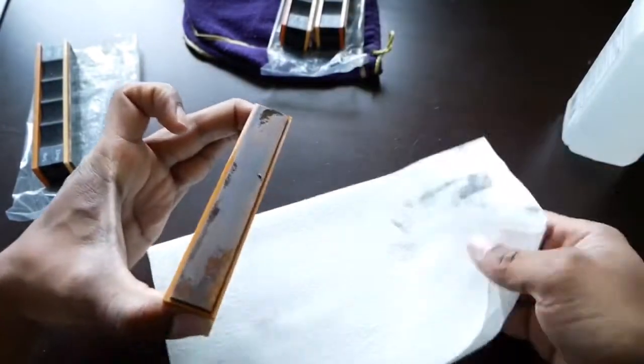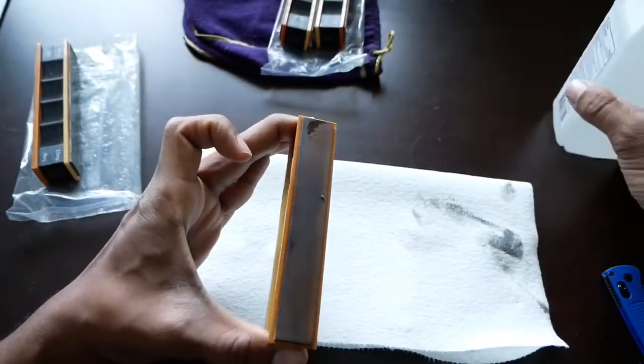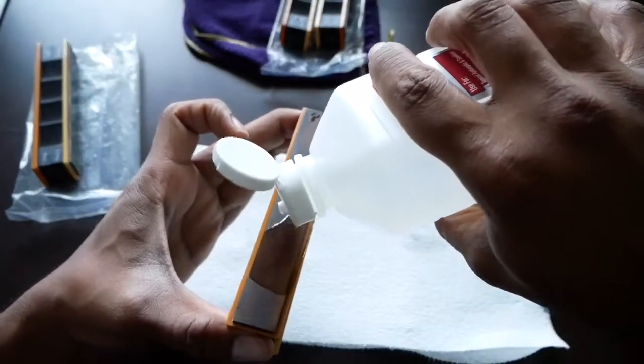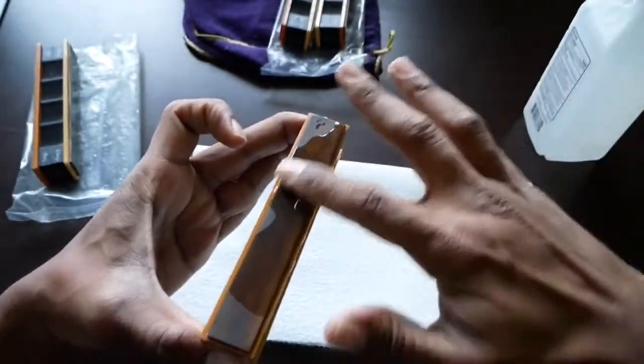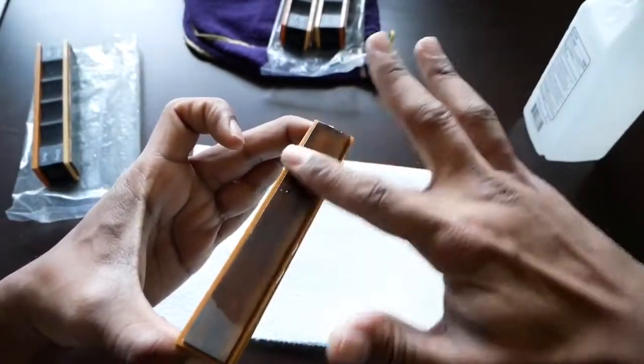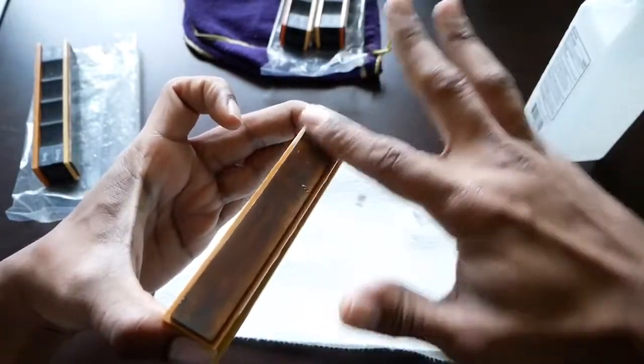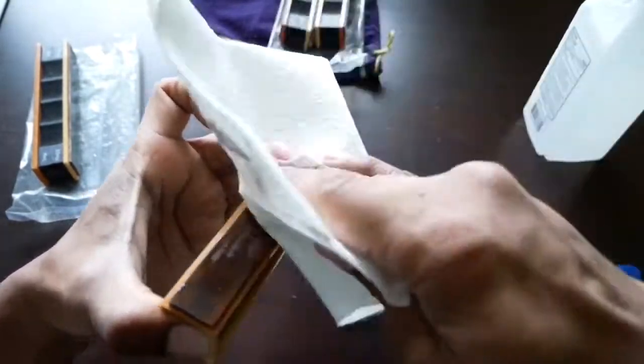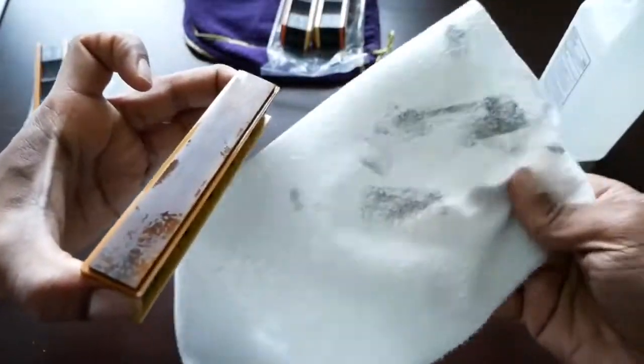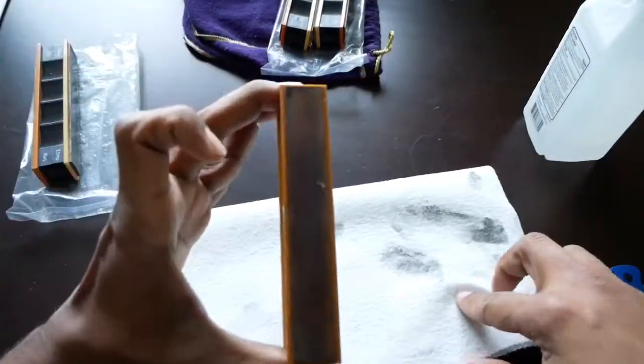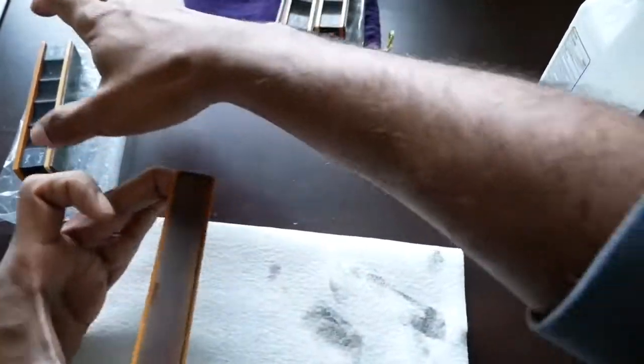Once I think I have it cleaned enough, I'll turn around and reapply the compound to the strop. I'm just going to continue to work the alcohol into here, and you can see how all that stuff is starting to come off.